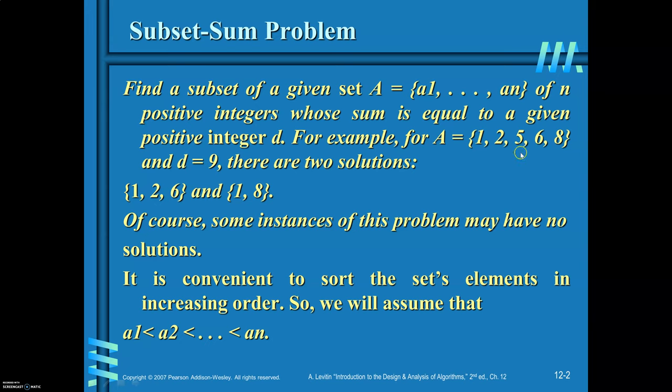For this, two solutions are possible. One is {1, 2, 6}. The sum of these three elements equals 9. Other solution is the subset {1, 8}. The sum of these two elements is again equal to 9. So in order to find the solution, arrange the elements of the set in descending order.